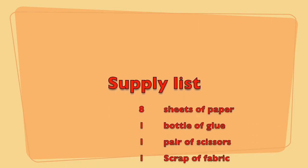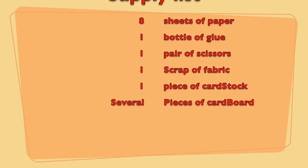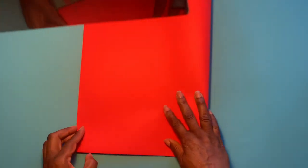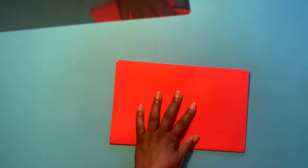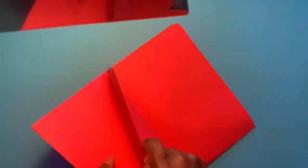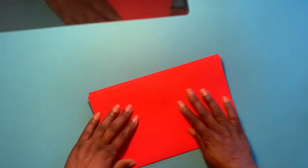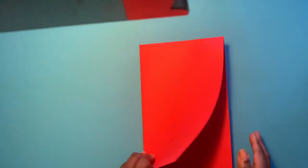Most of these supplies can be found around the house. Now while I chose to make my journal rainbow, you can make your journal whatever colors you like. As you can see by the supply list, the size of your paper determines the size of your journal. You can work with whatever paper you have available. It can be as big as poster board or as small as an 8 by 10 sheet of paper.